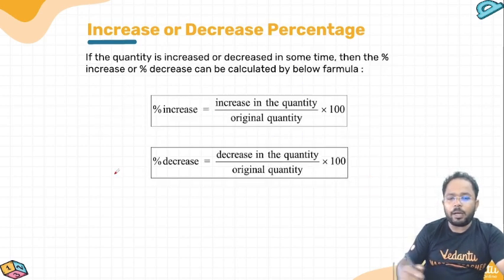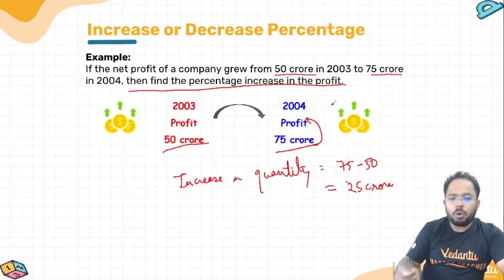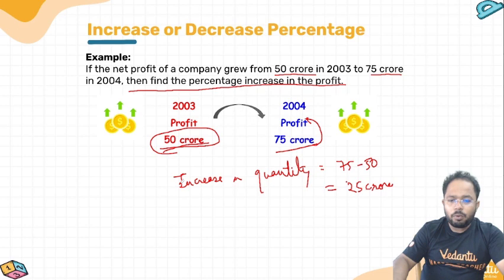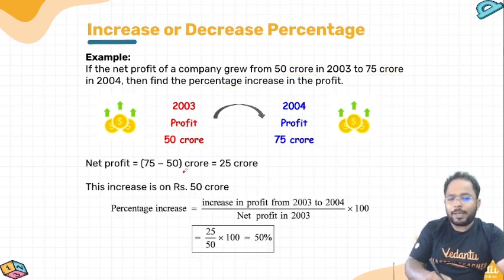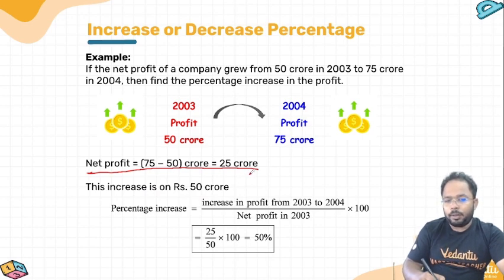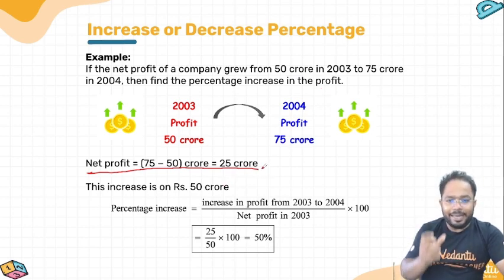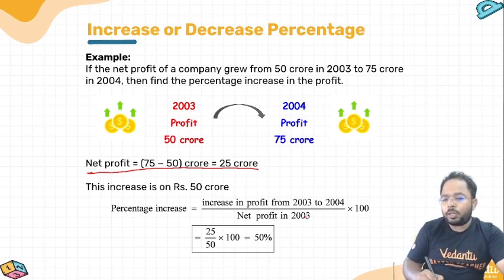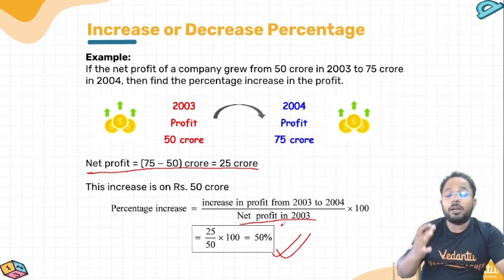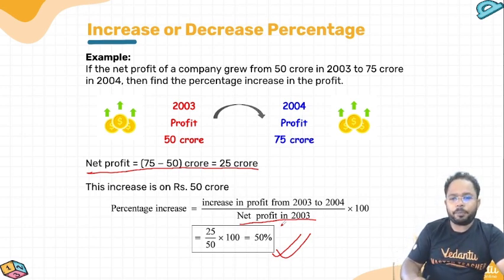As per the formula, increase in quantity divided by original quantity. Originally it was 50 crores, and the increase was 25 crores. So, percentage increase = 25 divided by 50, into 100, which gives us 50%. There has been a 50% increase in the profit.